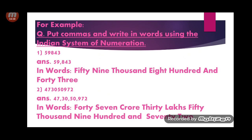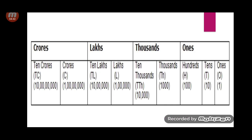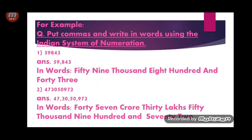Now I will tell you how to write number names in the Indian system and how to put commas. Suppose we take the example 59843. First we put the comma after three digits from the right, and then after every two digits. So the number becomes 59,843, and in words it is fifty-nine thousand eight hundred and forty-three.